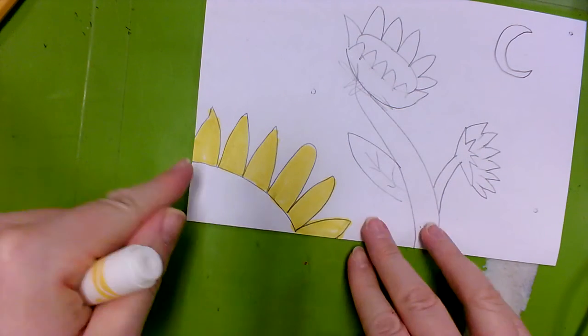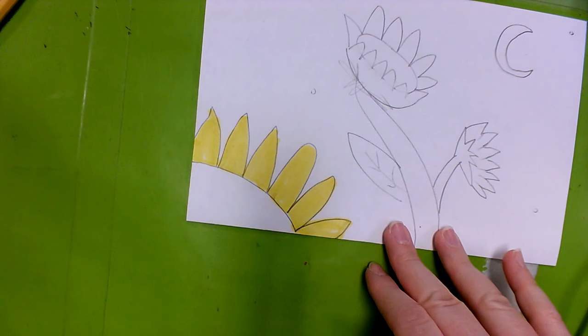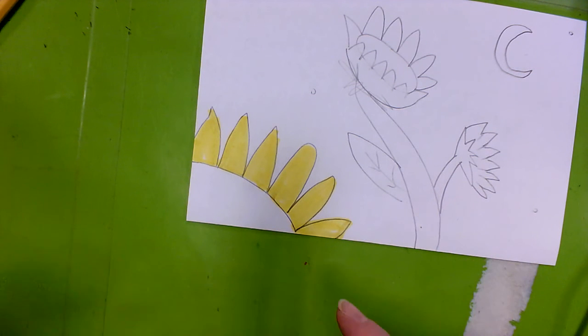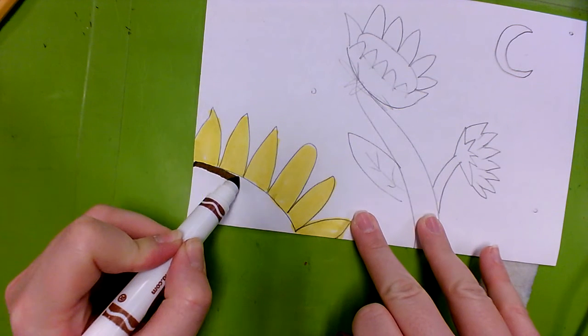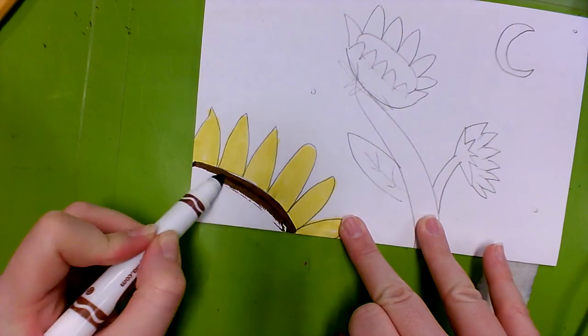Then here comes the middle. You can color it brown or gold. There's lots of different ways. I'll color mine brown. And remember coloring in the same direction will make it look a lot nicer.